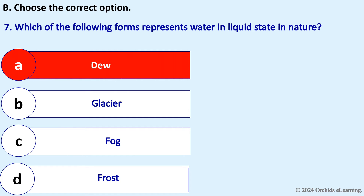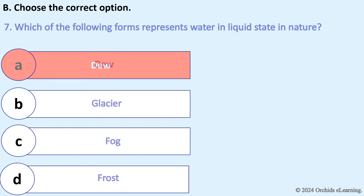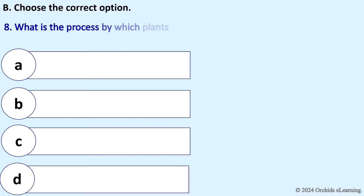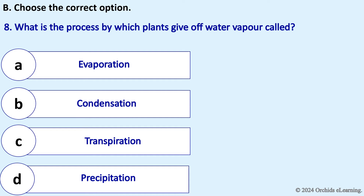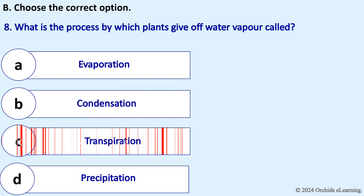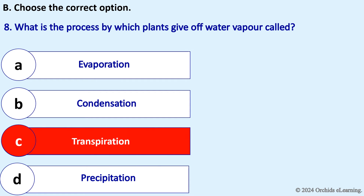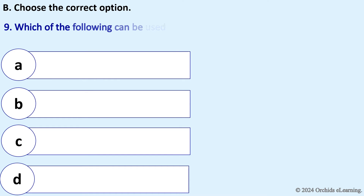Which of the following forms represents water in liquid state in nature? Answer: Dew. What is the process by which plants give off water vapor from the ground? Answer: Transpiration.